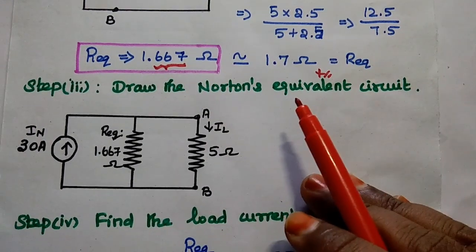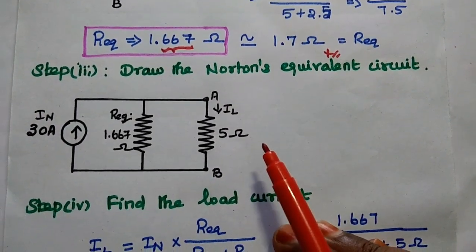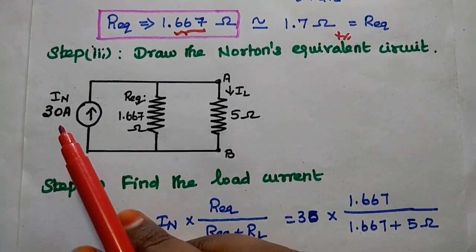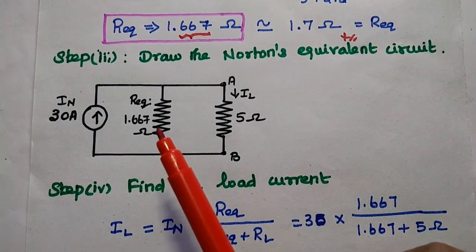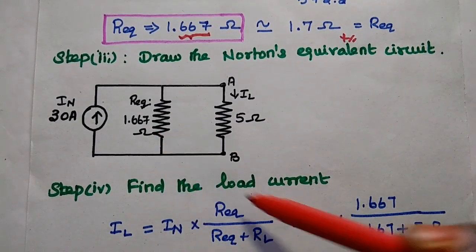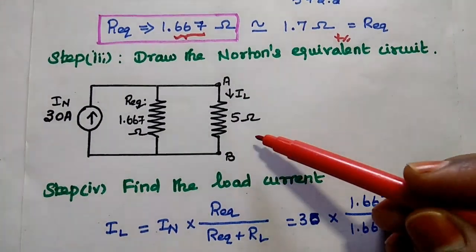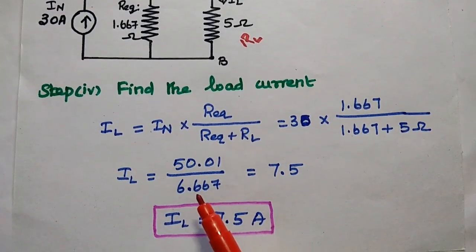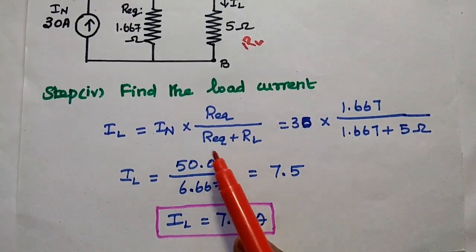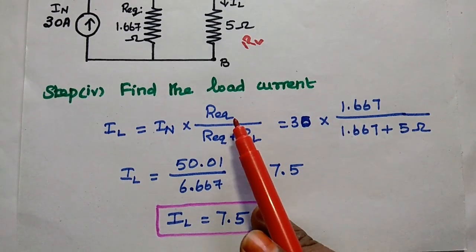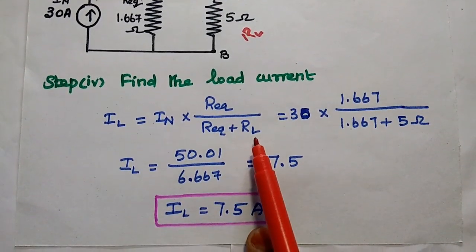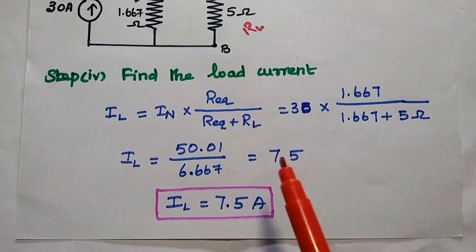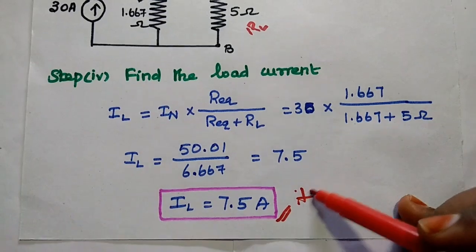After calculating the short circuit current and equivalent resistance, we draw the Norton equivalent circuit. Here the current source value is 30 ampere in parallel with 1.667 ohm as equivalent resistance, with the AB branch having a 5 ohm load resistor RL. Finally, the load current IL equals IN times equivalent resistance divided by the sum of equivalent resistance and load resistance: 30 times 1.667 divided by 1.667 plus 5, giving the answer 7.5 ampere.